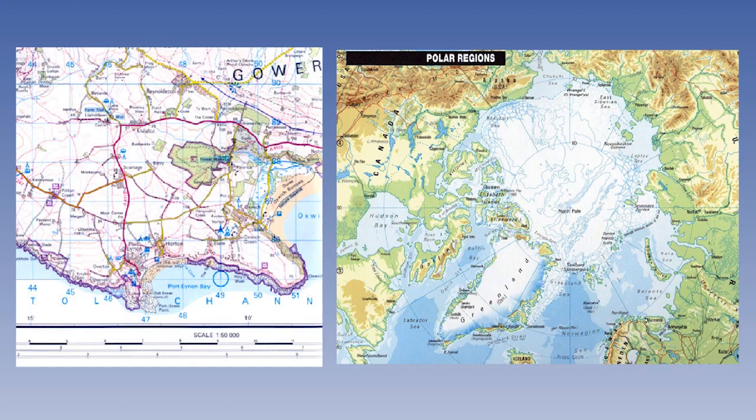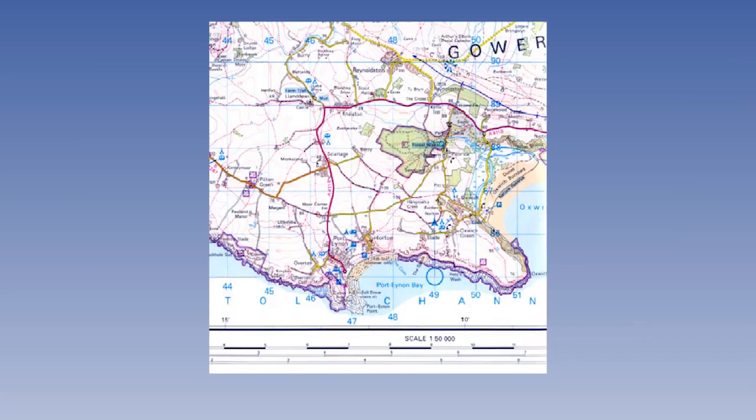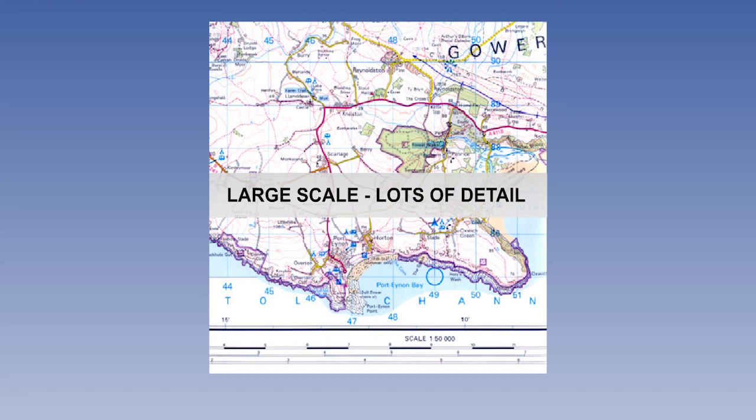People are often confused as to whether a chart is defined as a large scale or a small scale chart. This is a large scale chart. It is at a scale of 1 to 50,000. Two centimetres on this chart represents one kilometre on the earth. The chart does not cover much area, but there is a great deal of detail. Small roads and even individual houses are shown. So the rule is large scale, not much area, lots of detail.